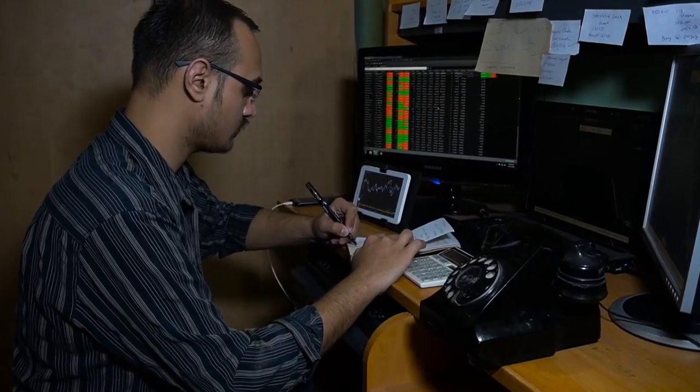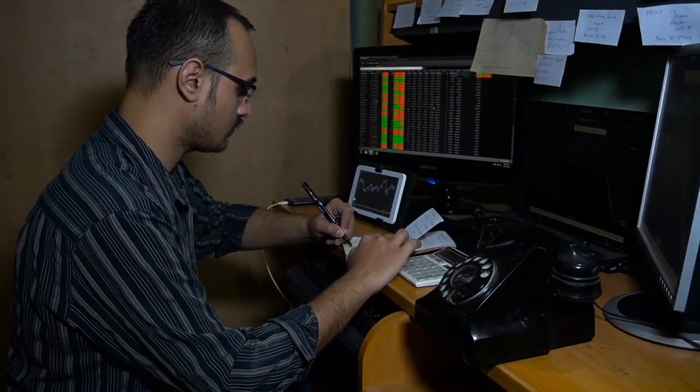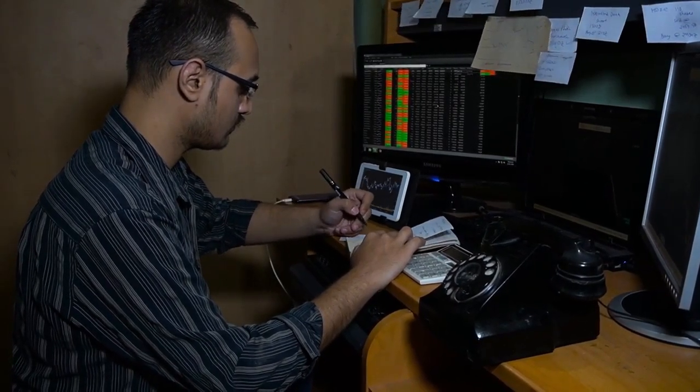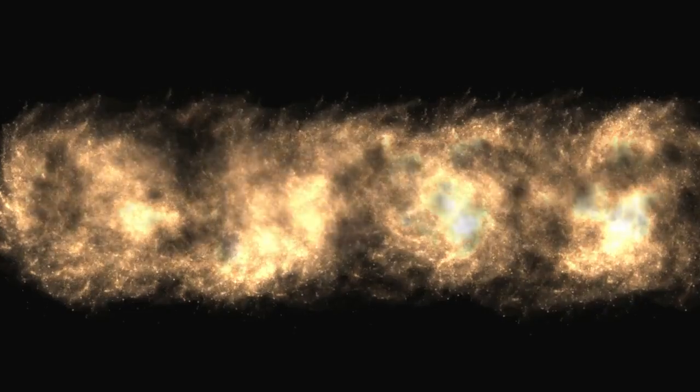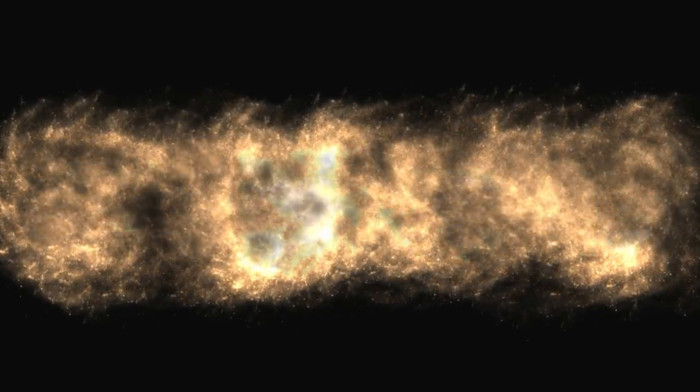Instead, staring back from the darkness was something that should not have been there. A galaxy, fully formed. Not a blur or a hazy blob, but a complex rotating system of stars, complete with spiral arms and even a monstrous black hole at its heart. Not just present, thriving, and it wasn't a one-off.